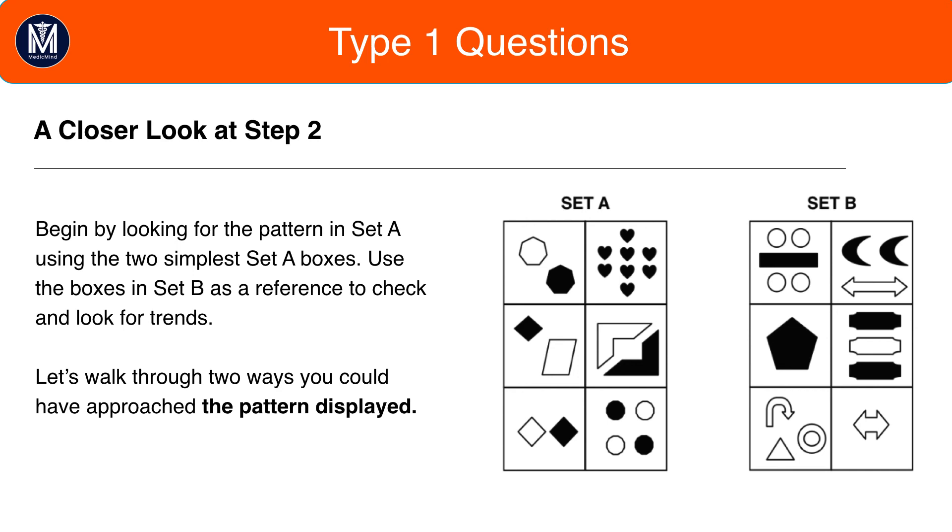Often, you'll have a box with one shape and nearby another box with three shapes and that's a big giveaway that it's an odd pattern for that particular set.